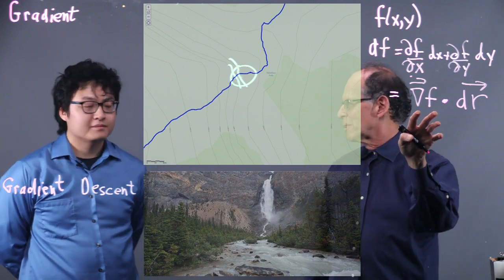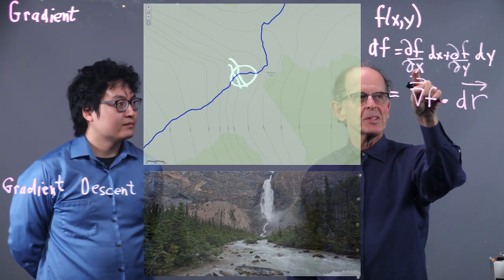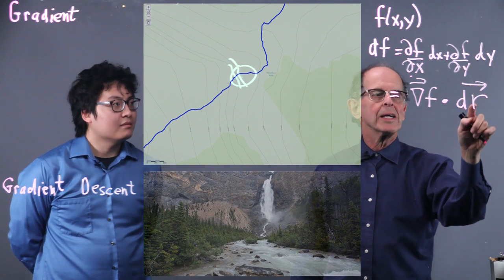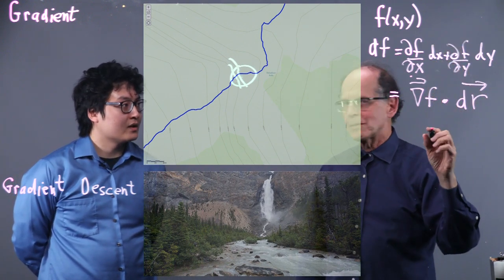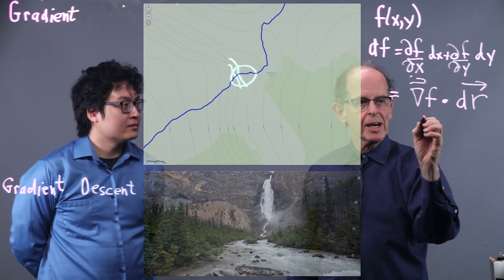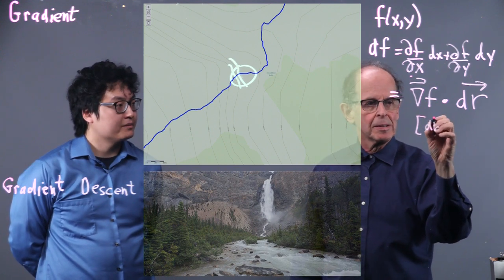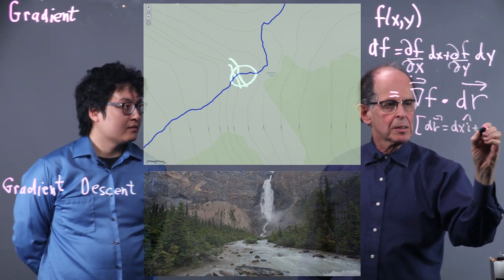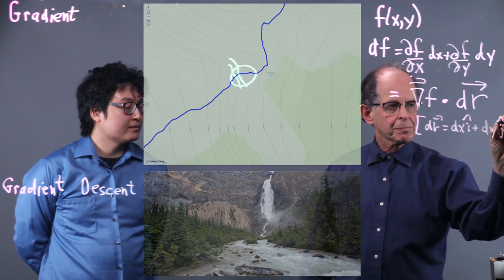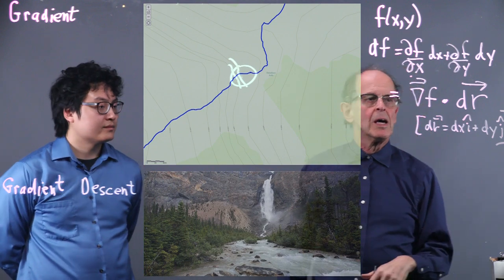We just know what the gradient is. It's a vector that has components DF/DX and DF/DY. And DR is DX i-hat plus DY j-hat. I'll put that in.